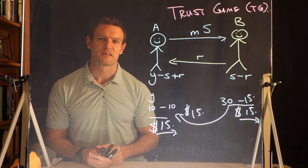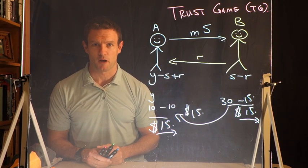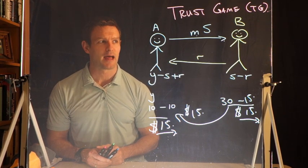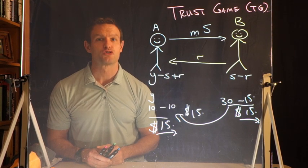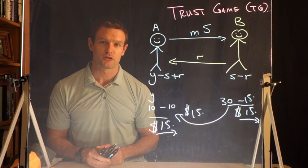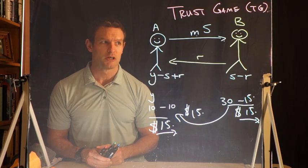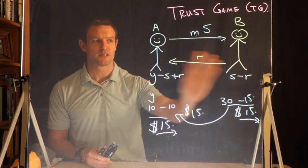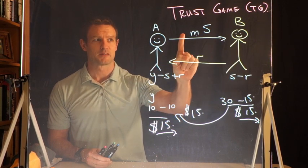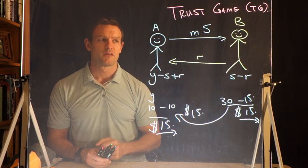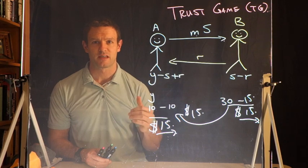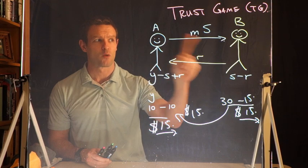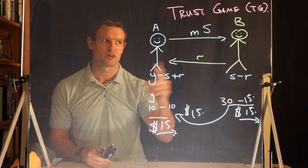Sometimes games like the trust game are paired with other experiments. The dictator game, discussed in a previous video, has a variant called the triple dictator game. For example, Ashraf, Bohnet, and Zeckhauser in their 2006 paper look at a version where A sends to B, but B cannot send money back. The amount A sends is simply tripled. This allowed them to compare behavior in the trust game versus the triple dictator game, and players' expectations about each other's behavior.